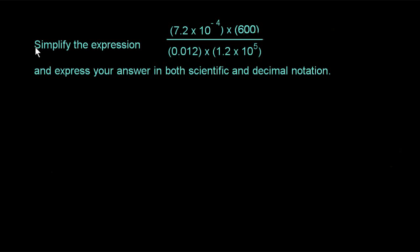Let's read this problem. It says to simplify the expression, and here's the expression. It has 7.2 times 10 to the negative 4 times 600 in the numerator, and in the denominator it has 12 thousandths times 1.2 times 10 to the 5th. And it wants us to express our answer in both scientific and decimal notation.